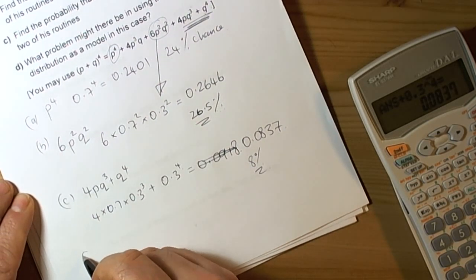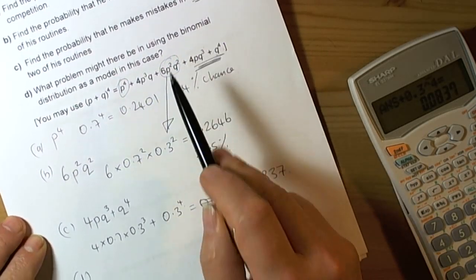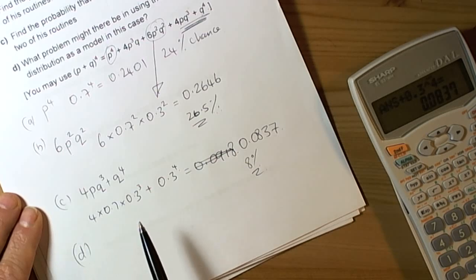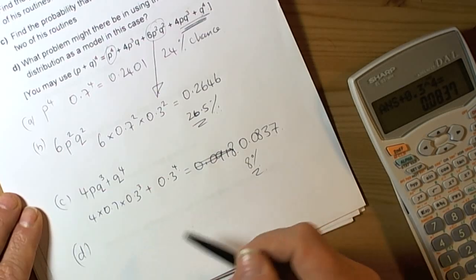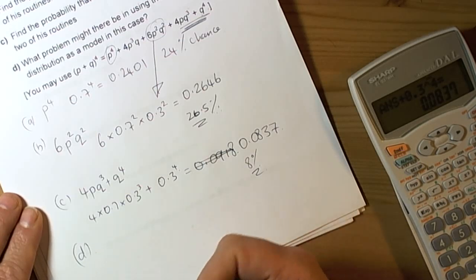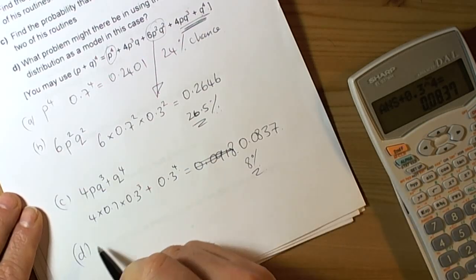For Part D, what problems might there be in using the binomial distribution? Well, remember one of the key conditions of a binomial is that the probabilities are independent and they won't change throughout the routines. In here we're assuming that even though if you have a mistake it could knock your confidence, we're assuming it doesn't.